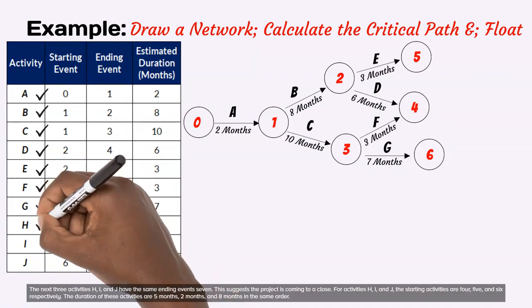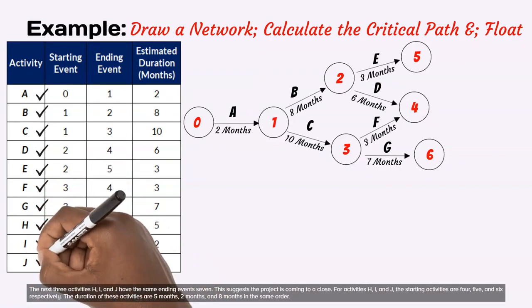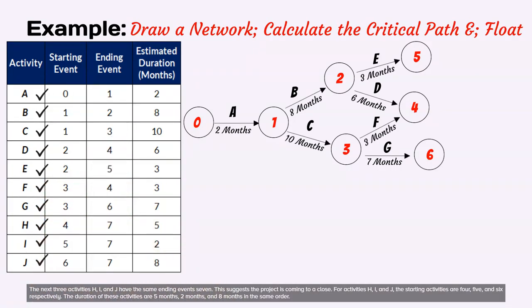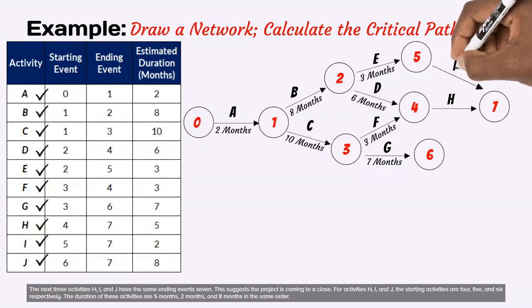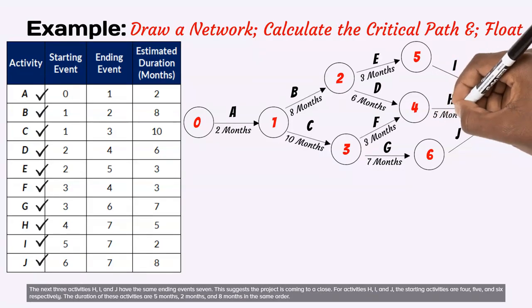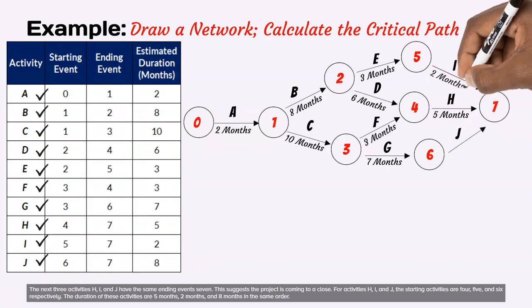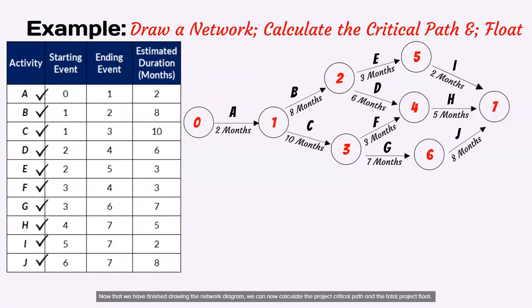The next 3 activities H, I, and J have the same ending event which is 7. This suggests the project is coming to a close. For activities H, I, and J, their starting activities are 4, 5, and 6 respectively. The duration of these activities are 5 months, 2 months, and 8 months in the same order. Now that we have finished drawing the network diagram, we can now calculate the project critical path and the total project float.